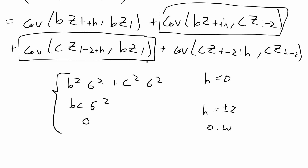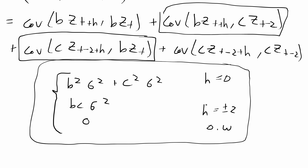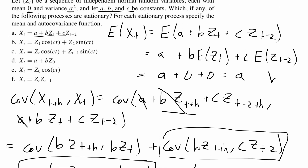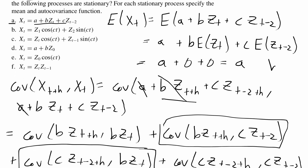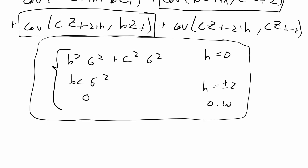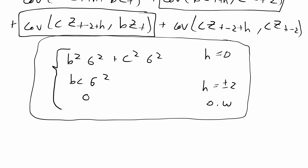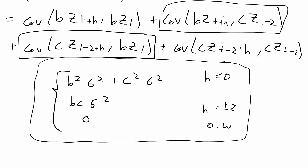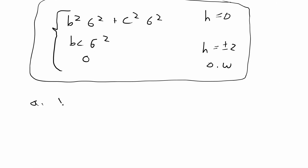This is the final autocovariance function, and as we can see, for any lag h the autocovariance expression does not depend on time t. We have that the mean does not depend on t and the autocovariance function does not depend on t for any lag h. Thus for problem a, we do have weak stationarity.